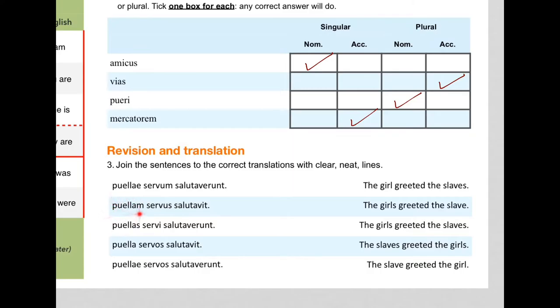That's nominative. That's accusative with the M on the end. So it must be the slave greeted the girl. So let's just whiz that one in. There it is at the bottom there.